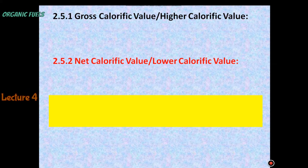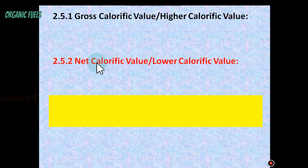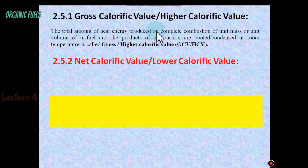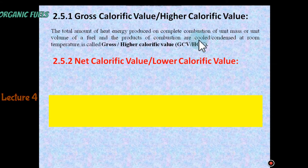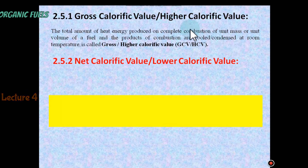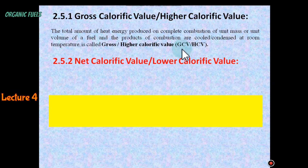Calorific value may be classified into two categories. First is gross calorific value, or higher calorific value. Gross calorific value is the total amount of heat energy produced on complete combustion of unit mass or unit volume of the fuel, and the products of combustion are cooled or condensed at room temperature. It includes both the heat produced by the fuel and the heat of condensation. Hence it is called gross calorific value or higher calorific value.